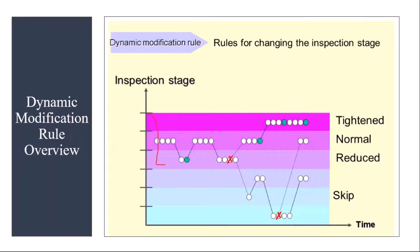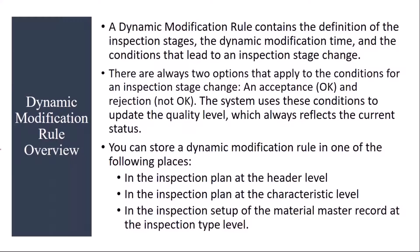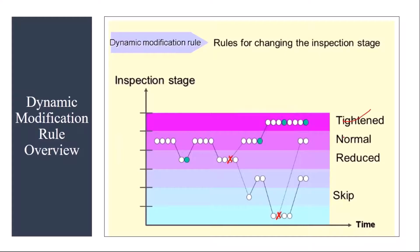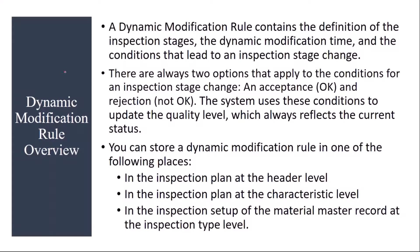To achieve these inspection stages, you use the dynamic modification. A dynamic modification rule contains the definition of the inspection stages, the dynamic modification time, and the conditions that lead to an inspection stage change. The dynamic modification rule defines these stages and the conditions that cause the system to proceed to an inspection stage change.